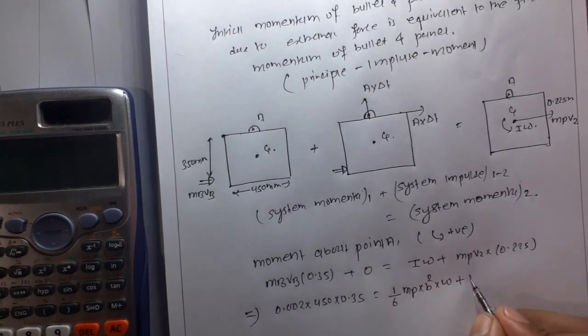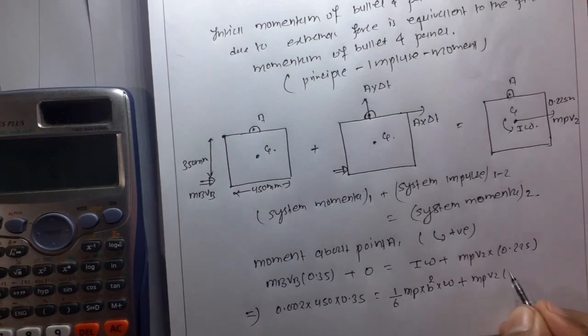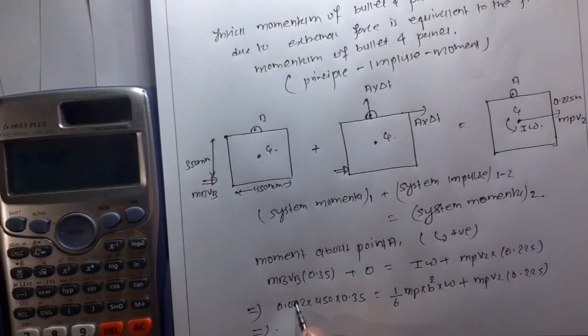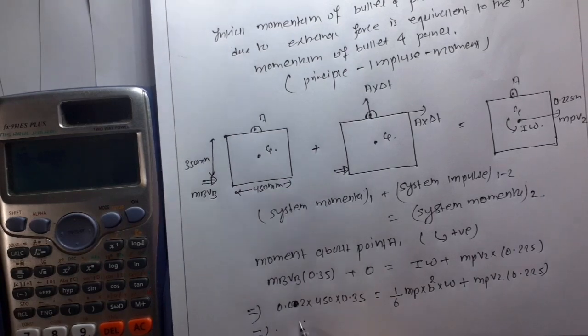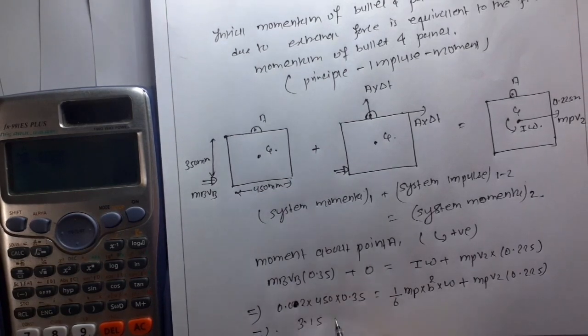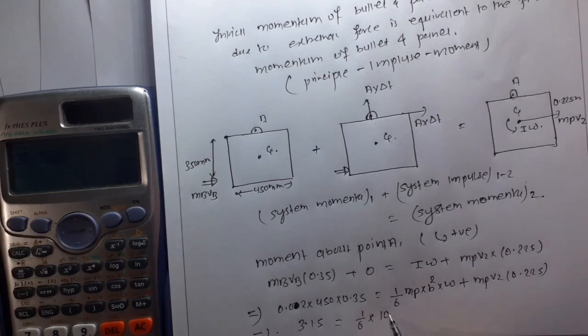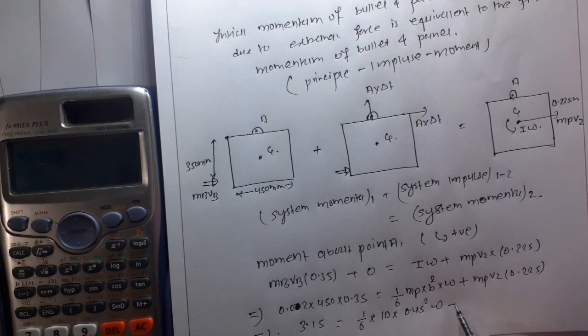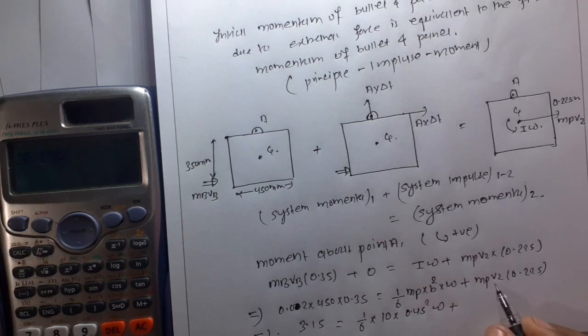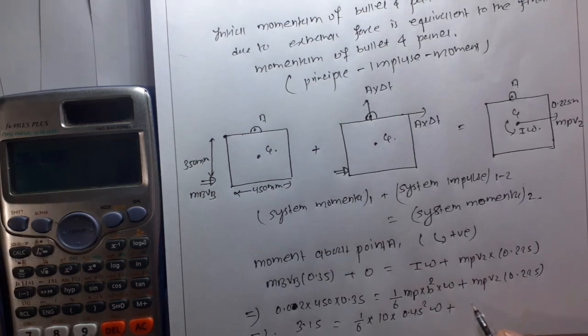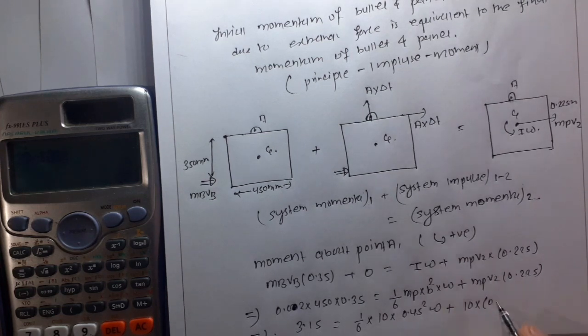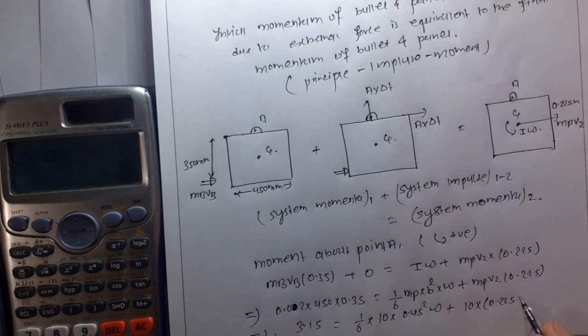So 3.15 is equal to one-sixth times 10 times 0.45 squared times omega, plus mb times 0.225 times omega, which is r times omega where r is 0.225.